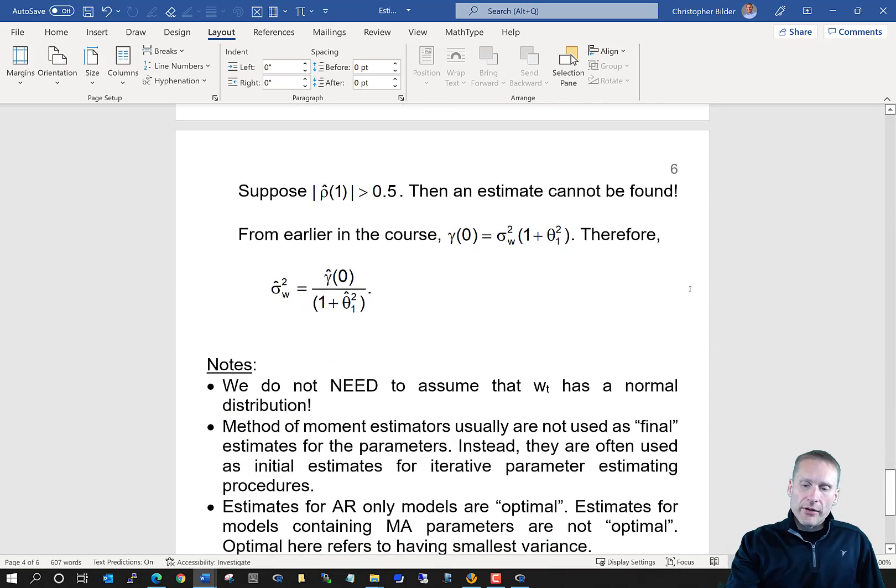Now, also earlier, we know from MA(1) that γ(0) = σ²w(1 + θ₁²). So how do I find an estimate for sigma squared w? Well, simply solve for it and put hats on the corresponding other quantities.